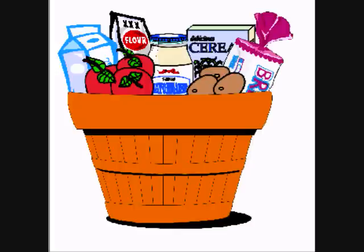The Consumer Price Index is a basket of about 400 commonly purchased goods and services that is used to represent overall consumption. Each month, the Department of Labor checks the prices of these 400 items in 85 different areas all over the U.S. Inflation exists when the average cost of the items is rising.